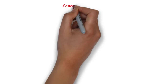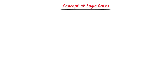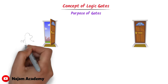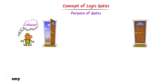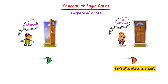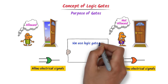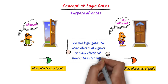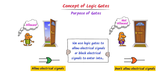Now it is time to learn logic gates. First, understand the basic purpose of a gate. Consider an open door and a closed door — with an open door you are allowed to pass through, with a closed door you are not. Similarly, logic gates either allow or block electrical signals from passing through. We use logic gates to turn any digital circuit on and off.